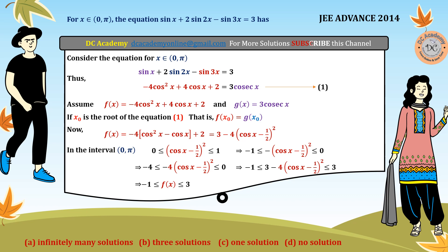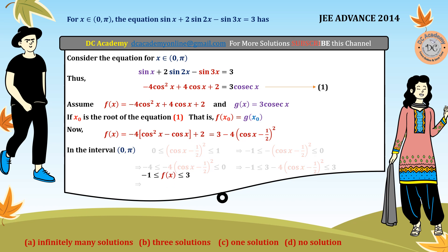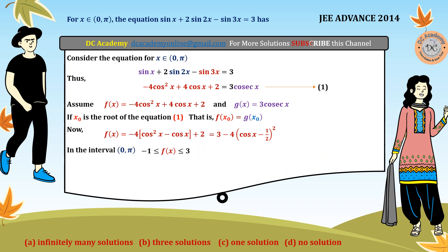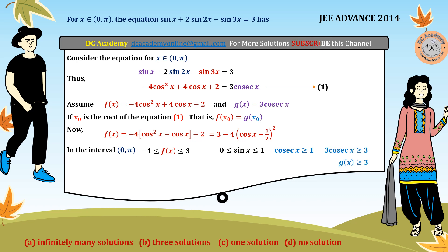Now we find the range of g(x) = 3cosec x. On (0, π), sin x lies between 0 and 1, so cosec x ≥ 1, which means g(x) = 3cosec x ≥ 3.